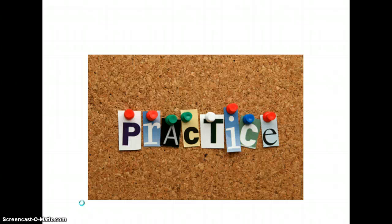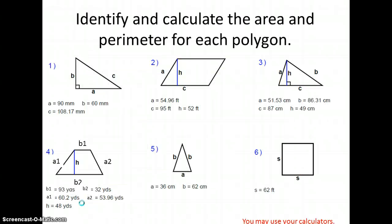Now it's time to practice. On the next slide you are going to get 6 figures. You need to name or classify them, then find the area and the perimeter — and remember, perimeter is adding all sides. Each problem needs three answers: the name of the shape, the area, and the perimeter. You can go back and watch any portion of this video as many times as you need to.